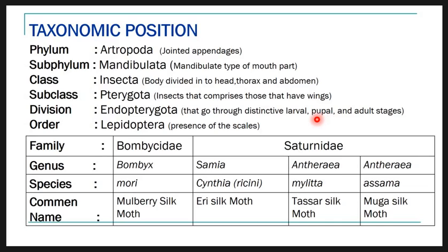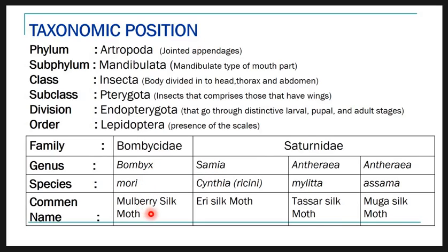They belong to the order Lepidoptera due to the presence of scales on their body. The silk moths majorly belong to two families: Bombycidae and Saturniidae. Bombyx mori belongs to the family Bombycidae, genus Bombyx, species mori, and is commonly known as the Mulberry silk moth.